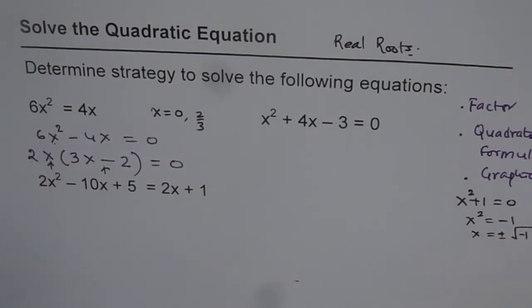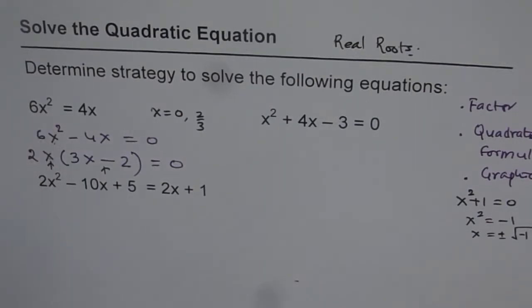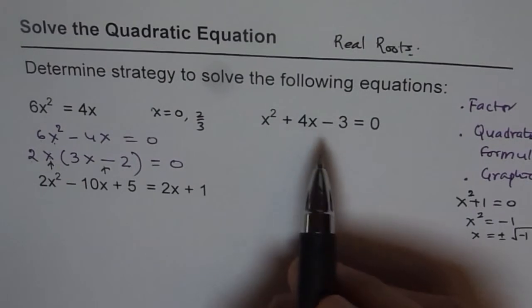So first strategy was bring the terms together, factor, and get the answer. Don't cancel. That is, you have to remember. The next one is, let's try to factor this.